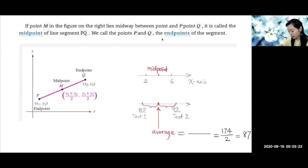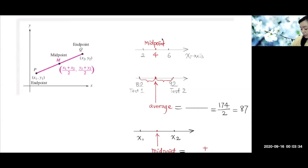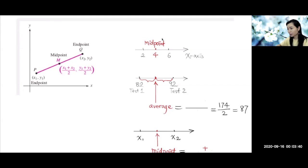Somebody said, is it 4? Yes, it is 4. Now, is there a formula to get this number? So we try to discover a formula to get this middle point.